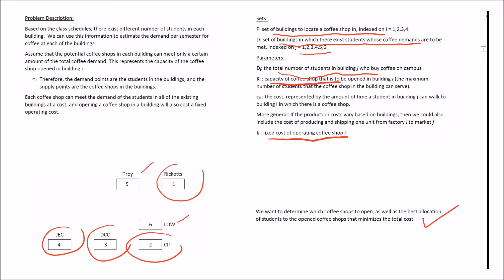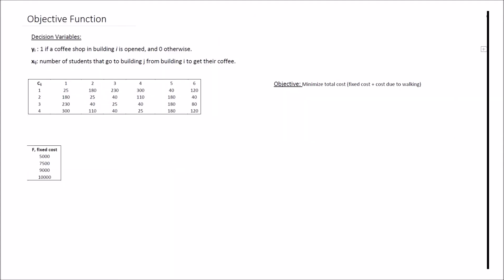Now I will talk about my mathematical model. The first step when formulating a mathematical model is to define the data, parameters, decision variables, objective function, and constraints. We have two decisions to make: one, where to locate the coffee shops, and two, how to allocate the coffee supply to meet demand. Decision variable yi equals 1 if a coffee shop in building I is opened and 0 otherwise, representing the open-or-not decision. Xij is the number of students that go from building J to building I to get their coffee, representing the allocation of supply to demand points.